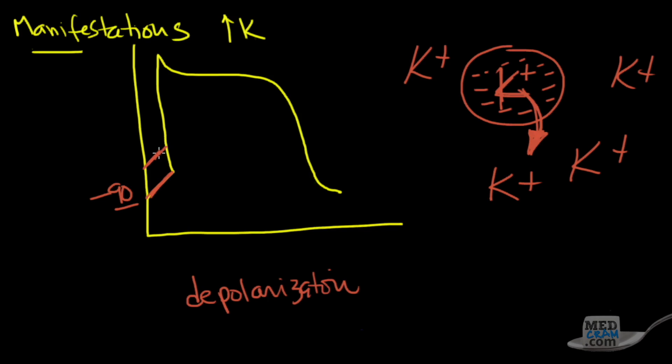So these cells are more excitable. And as a result of that, not only is it depolarized, but instead of having a nice sharp uptick, it's going to come up more slowly. And the repolarization is going to be somewhat dampened.